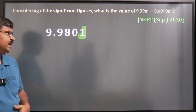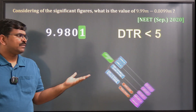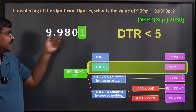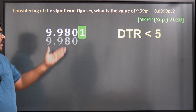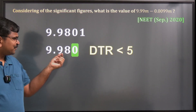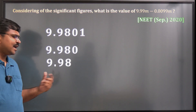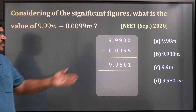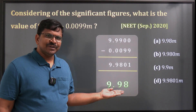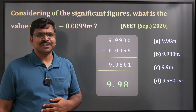Most students select 9.9801 directly since it appears in the options, but according to the rounding off rule for addition and subtraction, the result must have only two decimals. Applying the technique: DTR is 1, which is less than 5, so PD remains the same — drop it. The next DTR is 0, also less than 5, so PD remains the same. The correct rounded answer is 9.98, which is option A.